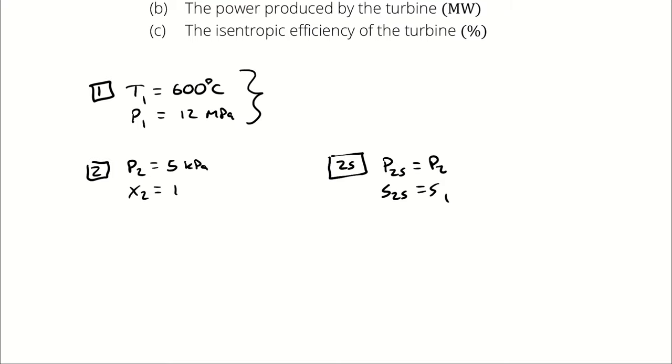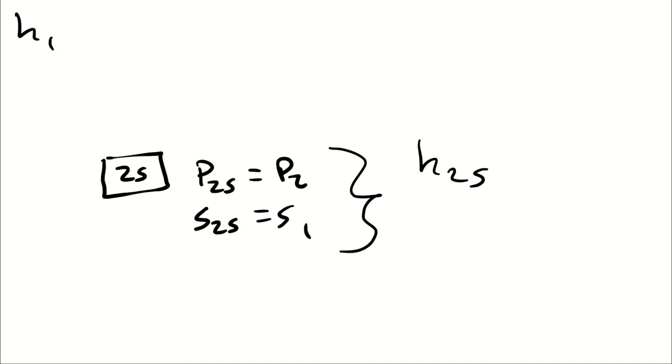So at state 1, I'm going to be looking up an enthalpy. At state 2, I'm going to be looking up an enthalpy. And then at state 2s, I'm going to be looking up an enthalpy. And those three enthalpies are going to be what I use to determine the isentropic efficiency of this turbine.